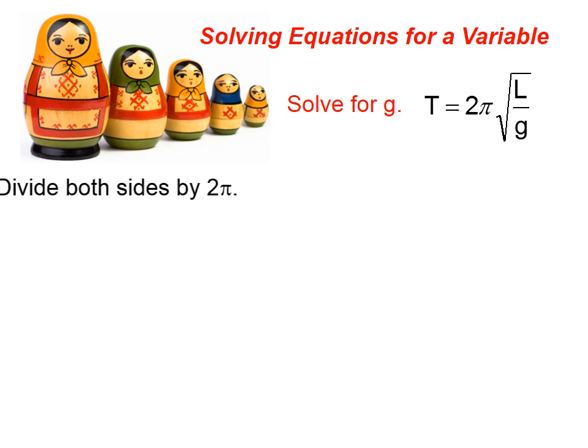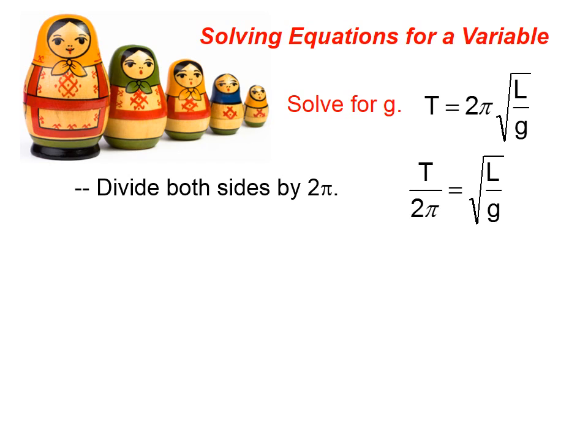So the first thing I would do is divide both sides by 2 pi. And when we do that, our expression has changed to look like this. Then, we need to get rid of this square root sign. Well, how do we do that? We square both sides.